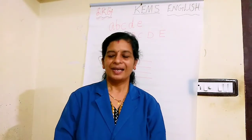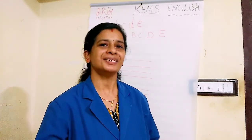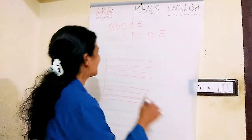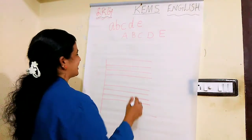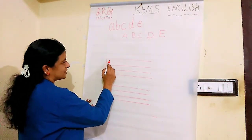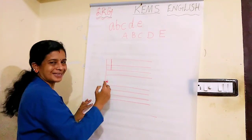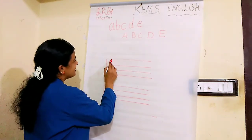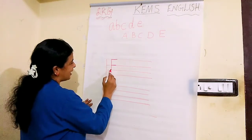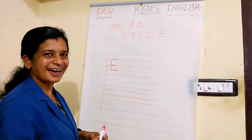Now we are going to learn how to write letter E. Letter E. Look. First step: standing line, sleeping line, sleeping line. Again, sleeping line.